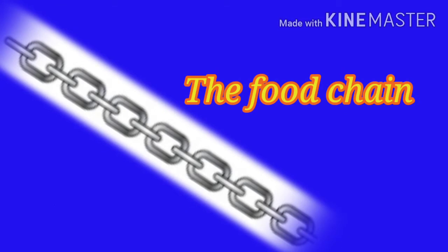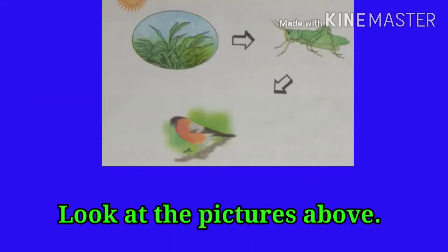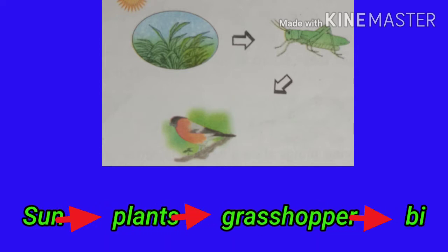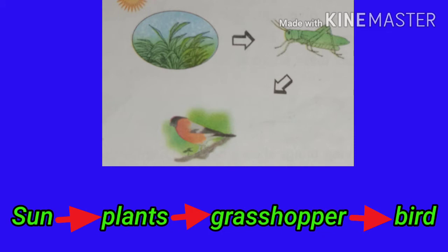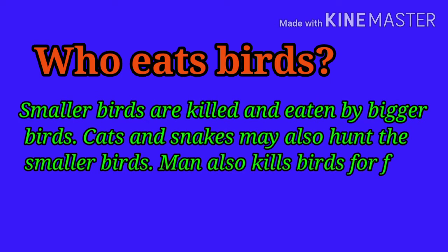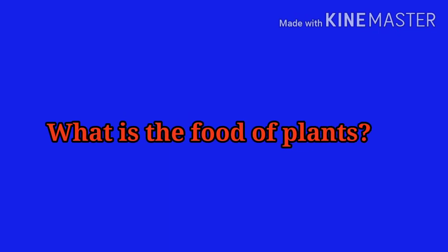The food chain. Students, look at this picture. In this picture you can see the sun, plants, grasshopper, and bird. Grasshoppers eat grass and leaves. Birds eat grasshoppers. Can you tell who eats birds? Smaller birds are killed and eaten by bigger birds. Cats and snakes may also hunt the smaller birds. Man also kills birds for food.